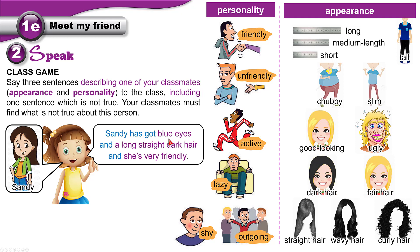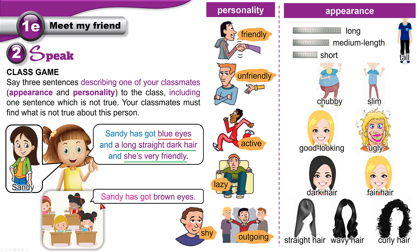For example: Sandy has got blue eyes — that's one. Long straight dark hair — that's two. She's very friendly — that's three. What is not true? Sandy has got brown eyes, not blue eyes — dark brown eyes.